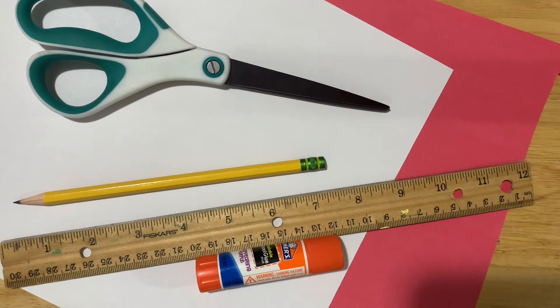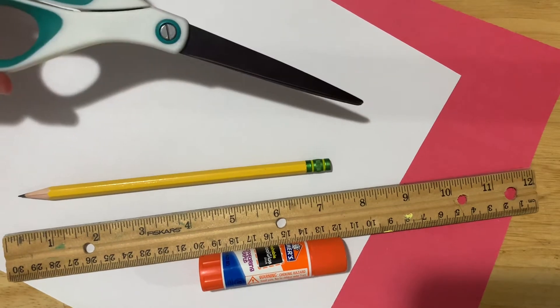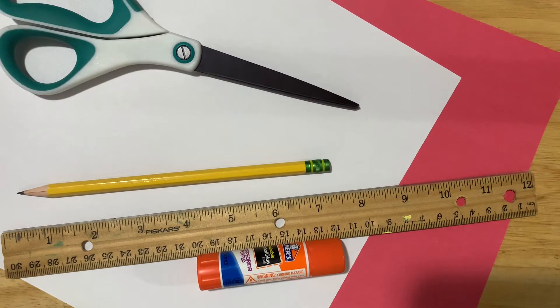For this origami, you'll need a glue stick, a ruler, a pencil, a scissor, and two pieces of paper, one red and one white.